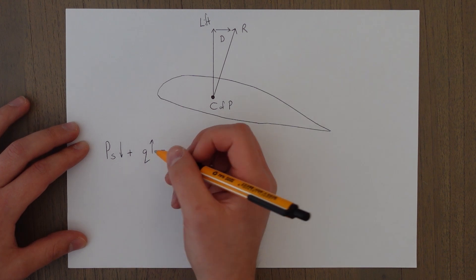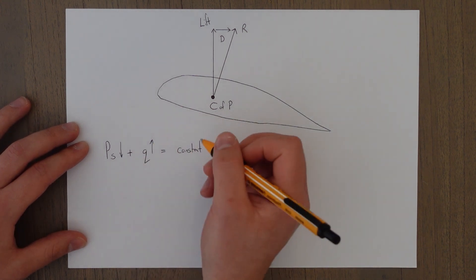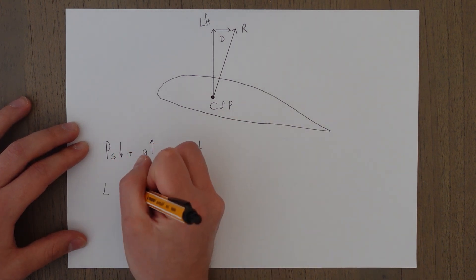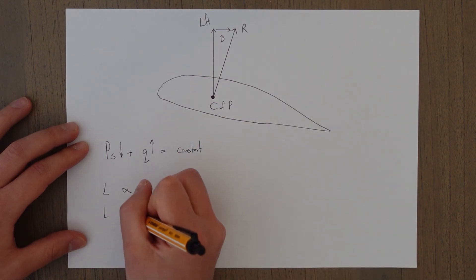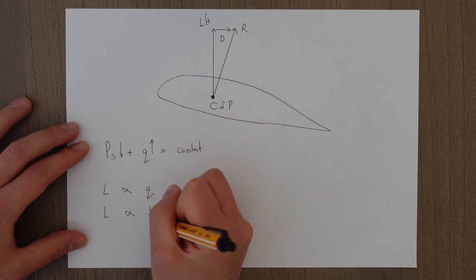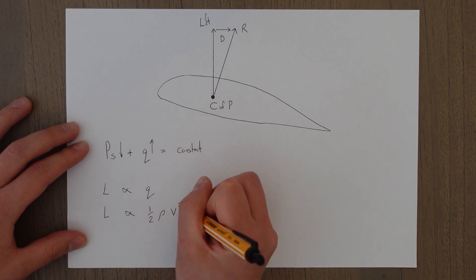So we can say for sure that our lift varies with our dynamic pressure, or our lift varies with a half rho v squared.